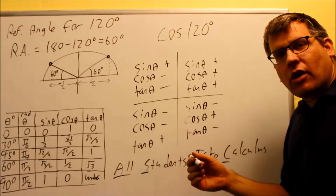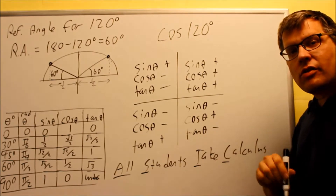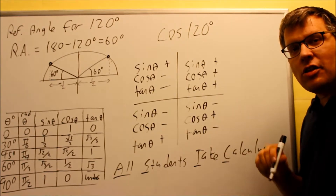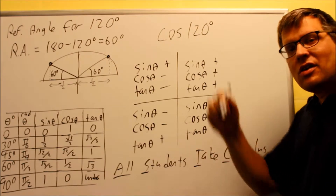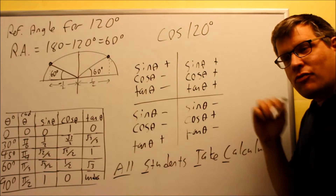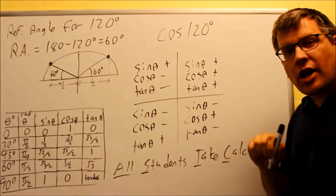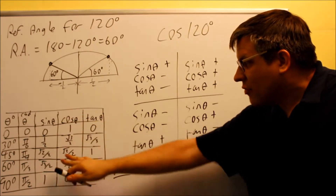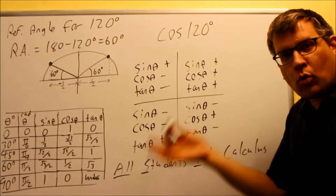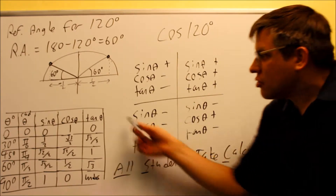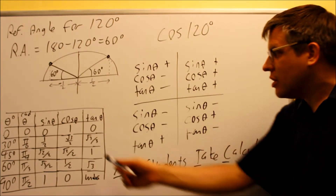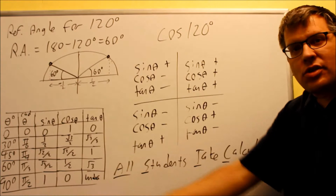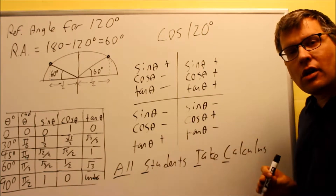In future problems, when I refer to the All Students Take Calculus sign chart, this is the one I'm referring to. We need to use this when going through the steps for finding a trig function at any angle. We want steps we can follow to find the trig value at any particular angle — it doesn't matter if it's between 0 and 90. We're looking at any angle around the unit circle. Of course, the problems they give you will have reference angles that take you back to a 30, 45, or 60.